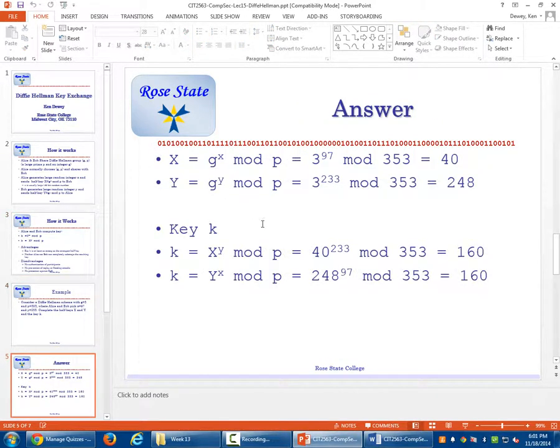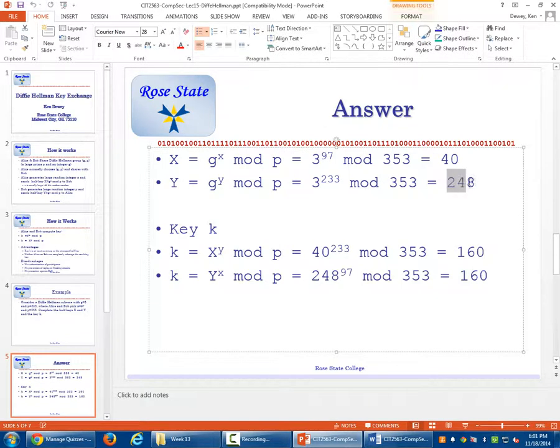Because if I just gave you, let's go over here to an answer. If I just gave you this 248, so if you had 3 and 353 and knew 3 was raised to something, could you come up with that? I mean, that would be very hard to figure out exactly which number is used to generate this. So this 97 and 233 are never shared. Makes better sense now?